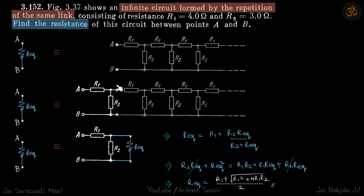Because it's an infinite ladder, if you just increase one more step the resistance should still be the same. So across A-B, if the resistance is R equivalent, then if you just add one more unit on the left, it is still R equivalent.